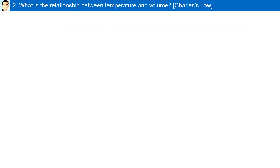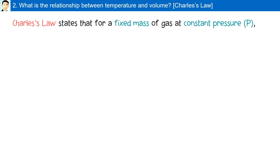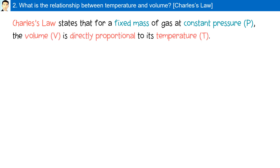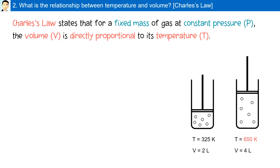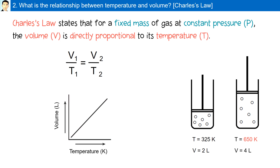What is the relationship between temperature and volume? Charles' law states that for a fixed mass of gas at constant pressure, the volume is directly proportional to its temperature. Here, the temperature is 325 Kelvin and 2 liters. If you were to double the temperature to 650 Kelvin, the volume will also double to 4 liters. V1 divided by T1 is equal to V2 divided by T2. It's a direct relationship.